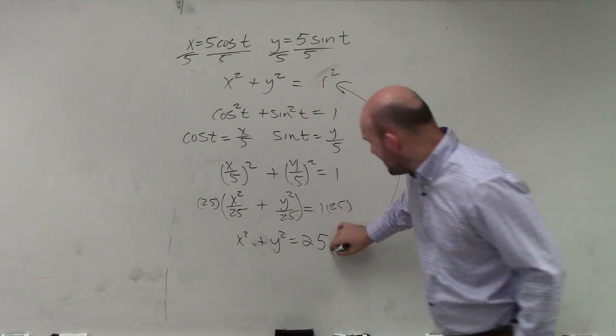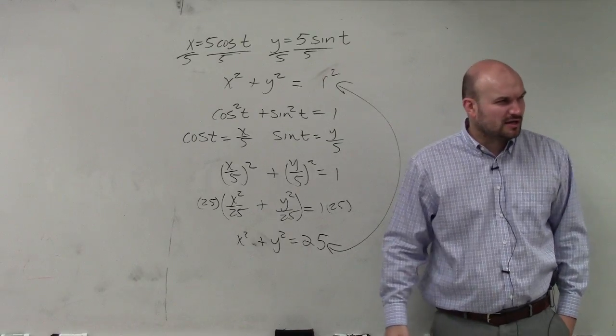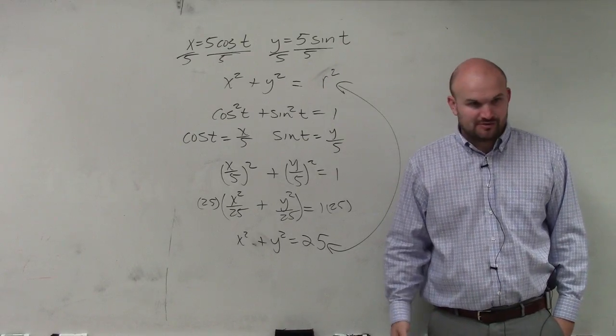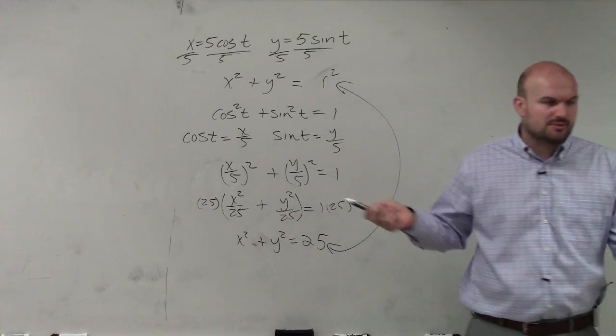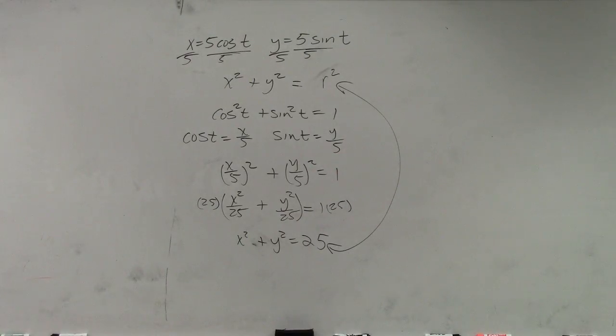And does that now look like a format that we're a little bit more familiar with from our geometry class as far as the equation of a circle? Yeah, it's x squared plus y squared, where the radius is going to equal 5.